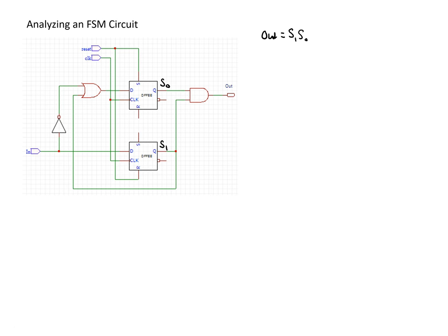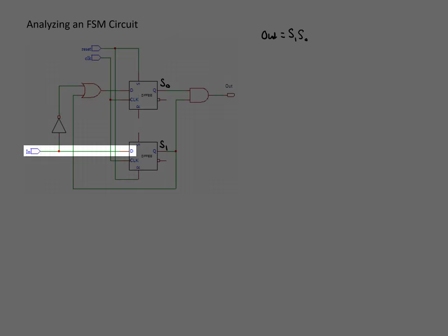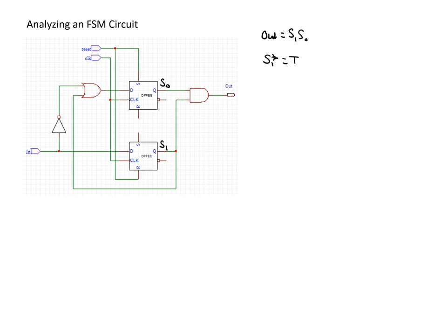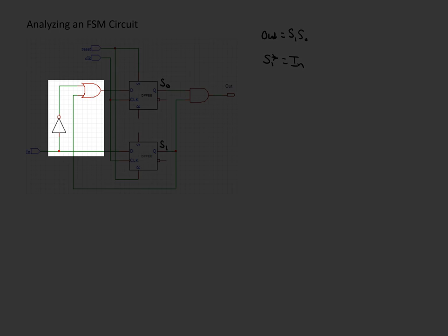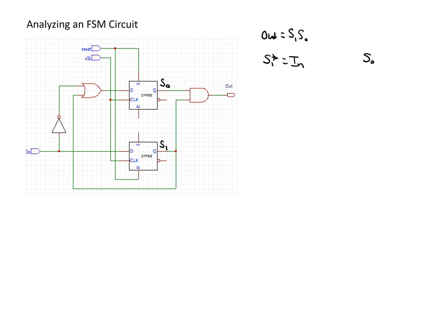Looking at S1, we can see that the only input to S1 is from 'in', so we can say that the next value for S1 is just equal to whatever the input value is. And then for S0, we can see that the input to the D flip-flop for S0 is the OR of the inverse of 'in' as well as S1. So we can say that the next value for S0 is equal to (NOT in) OR S1.